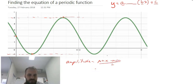There are other ways to find the amplitude as well, but this is one way to do it. 5 minus minus 1 over 2, that's going to be 3. So my amplitude for this particular curve is 3.